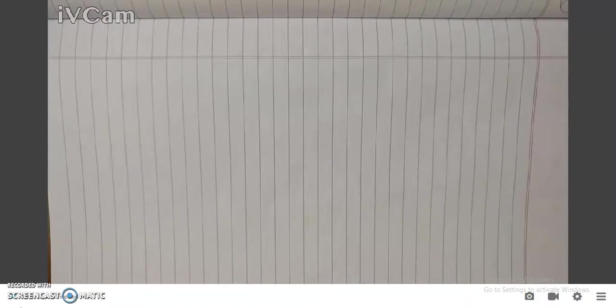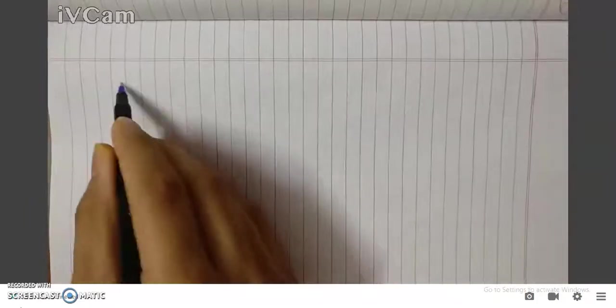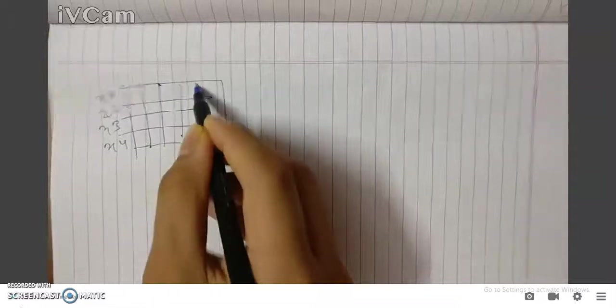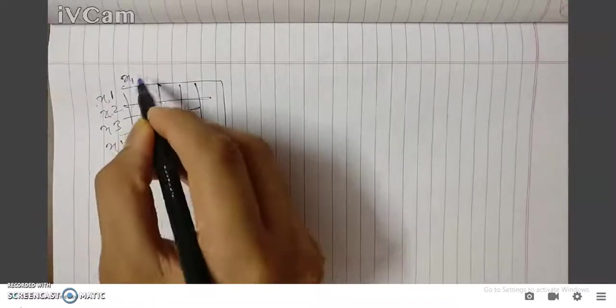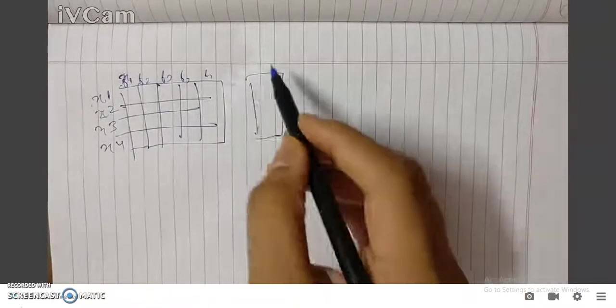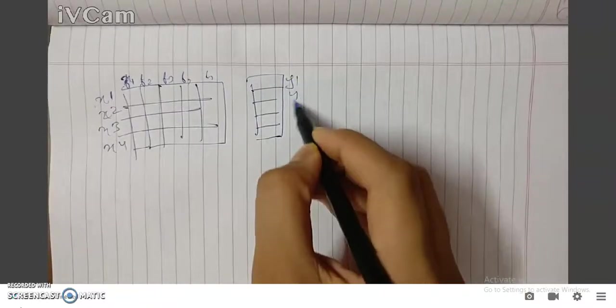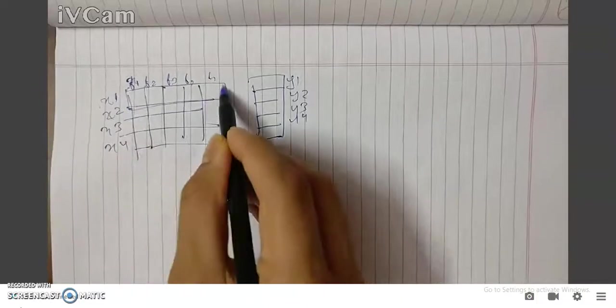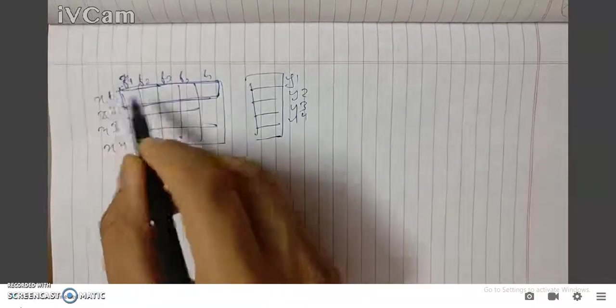Suppose we are given X data like this, and these are X1 point, X2 point, X3 point, X4 point. These are the feature sets like f1, f2, f3, f4, f5. And corresponding to these X feature sets, we are given the Y label data: y1, y2, y3, y4.